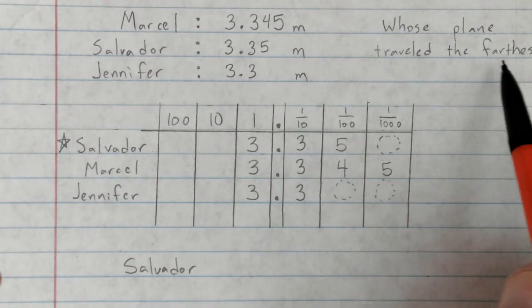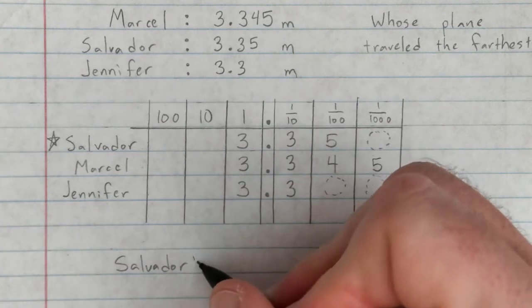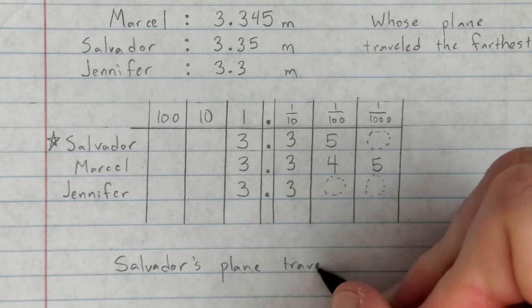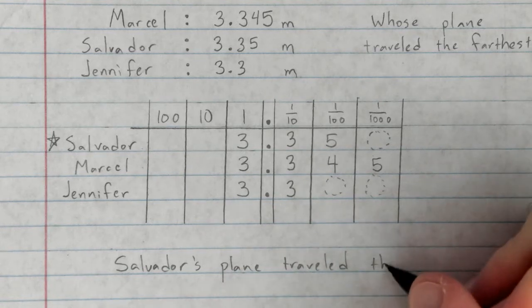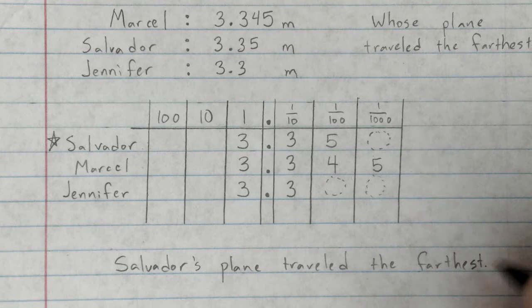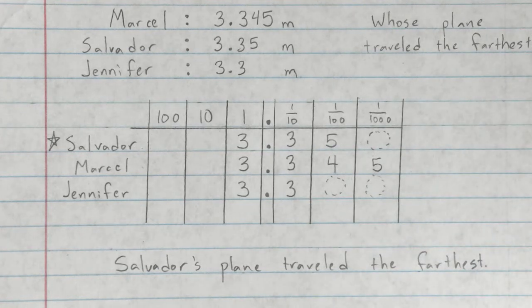So let's write our answer and then we'll be done. Whose plane traveled the farthest? Salvador's plane traveled the farthest. Salvador's plane traveled the farthest, and please make sure you write out that sentence.